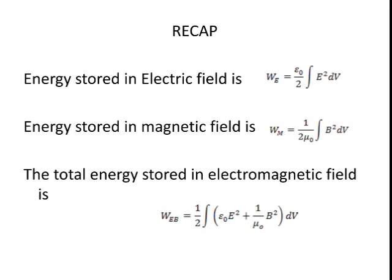The energy stored in magnetic field is 1 by 2 mu naught times the volume integral of B square. Therefore, total energy stored in electromagnetic field is equal to the sum of energy stored in electric field and the energy stored in magnetic field.